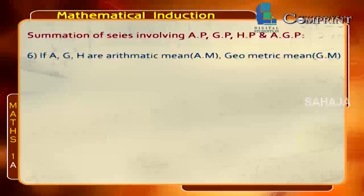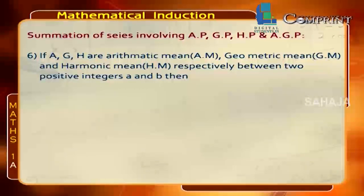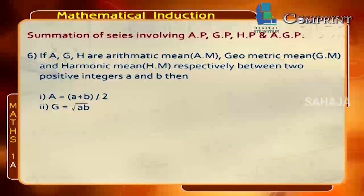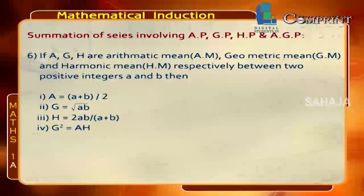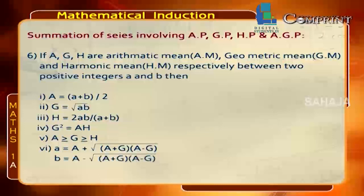If A, G, H are the arithmetic mean, geometric mean, and harmonic mean respectively between two positive integers a and b, then: A = (a+b)/2, G = √(ab), H = 2ab/(a+b), G² = AH, and A ≥ G ≥ H. Also, a = A + √[(A+G)(A−G)] and b = A − √[(A+G)(A−G)].